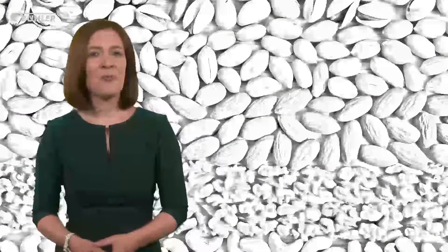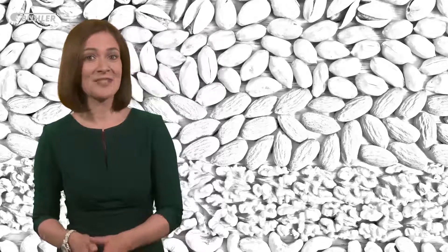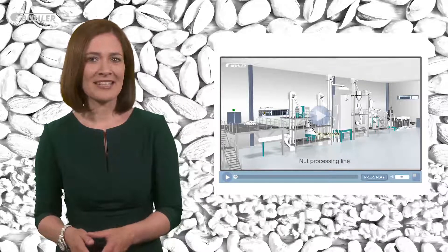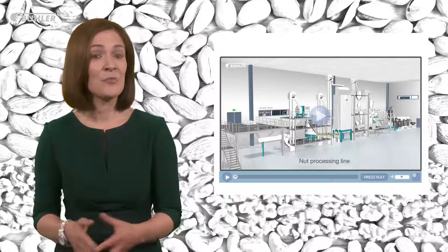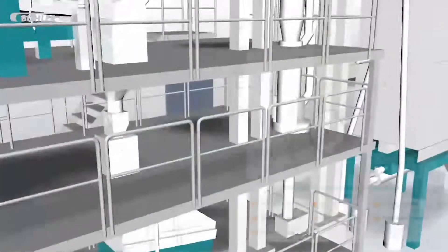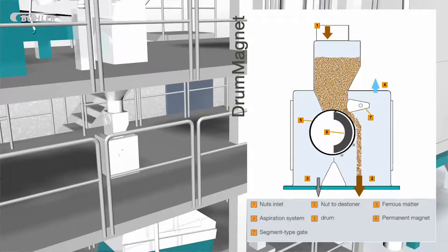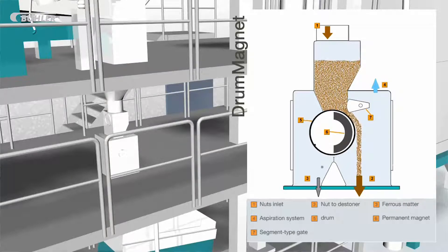Now you know that foreign body removal machines typically use shape, size, colour, density and magnetic properties to remove hazardous items — let's take a look at the actual machines themselves. The drum magnetic separator uses magnetic properties to remove foreign bodies. As you can see in this animation, the product is fed through into the rotating drum which also includes a static magnetic part. The good product — the product which doesn't have any magnetic properties — makes its way down into the accept stream, whereas magnetic foreign bodies like ferrous metals are attracted to the surface of the drum.